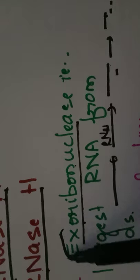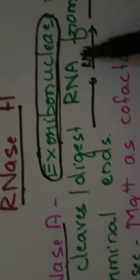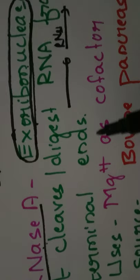That is why it is known as exoribonuclease. Exoribonuclease means outer side or the periphery. RNase A enzyme is an exoribonuclease enzyme. That means it will cleave or digest RNA from the terminal ends.